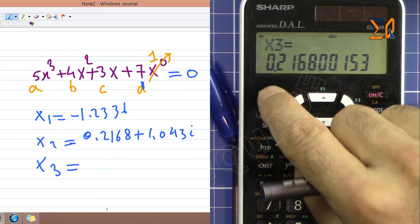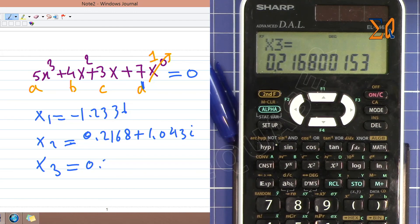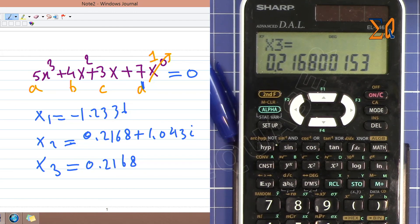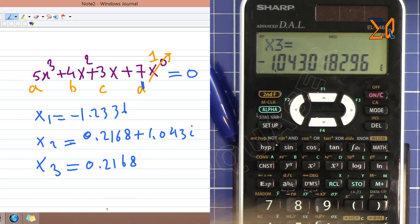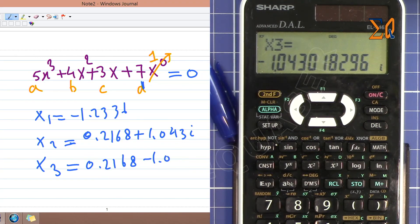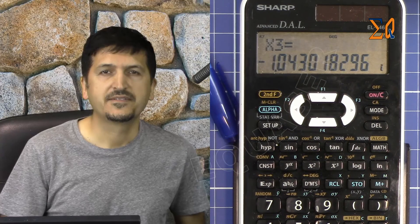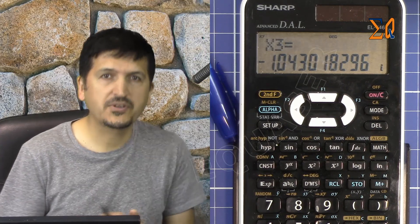And then 0.2168, this will be minus, yes minus 1.043i. This was how you solve quadratic equations and cubic equations and finding roots of real and imaginary numbers.